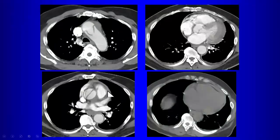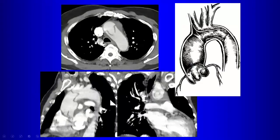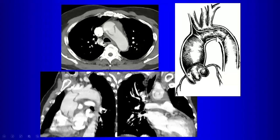Here is an unusual appearance: the dissection flap from the ascending aorta, during systole, is being pushed into the aortic arch, creating what looks like a tunnel in the aortic arch. A complication of this is obstruction of the great vessels coming off the arch.